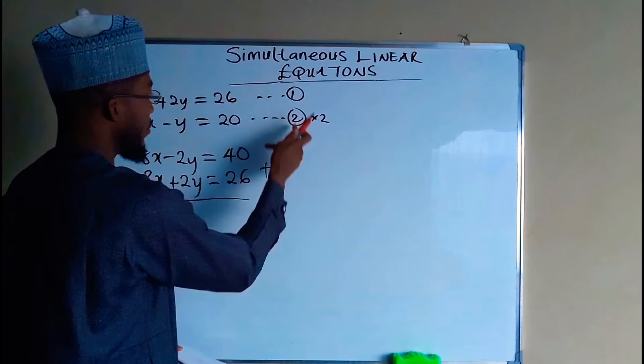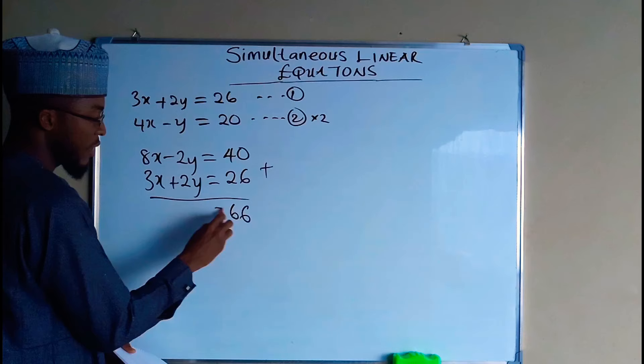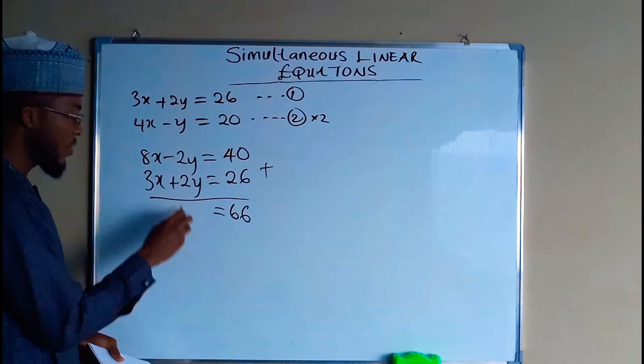This plus this is going to give us 66. This is equal to, if you add this one together you are going to get zero, then you add 8x plus 3x and this will give us 11x.